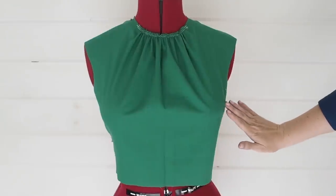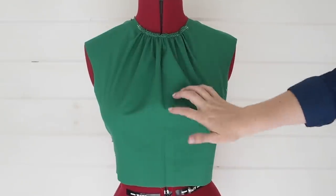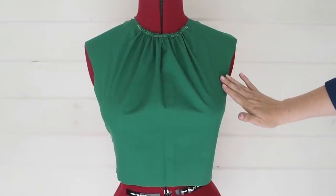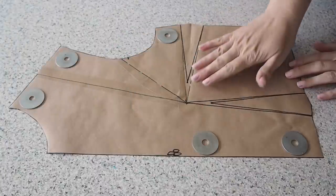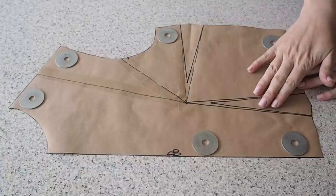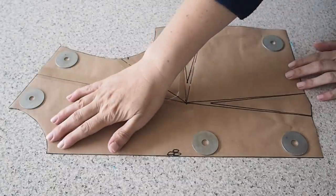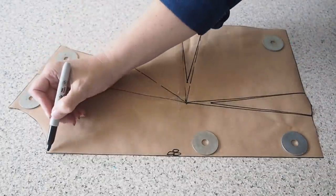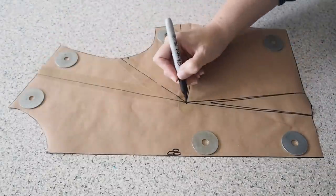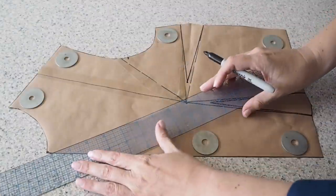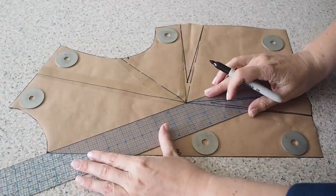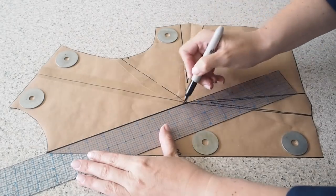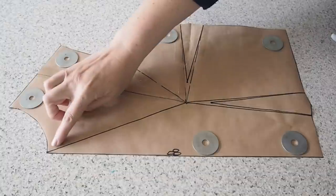So now for the third technique, I wanted to show how to transform a dart. And the example I'm going to use today is transforming darts to gathers. So using the same base pattern as I've just drafted, I'm first of all going to mark where I want my gathers to be. So popping in a dot there at the center front neck point, drawing a line from the apex to that dot. And the next step is to open up that line and my two darts.